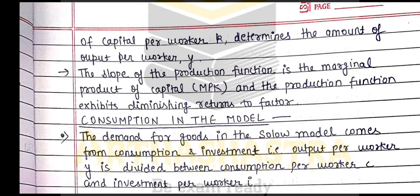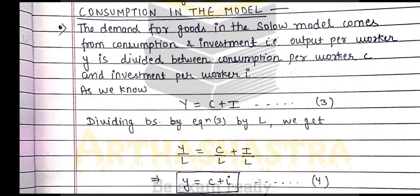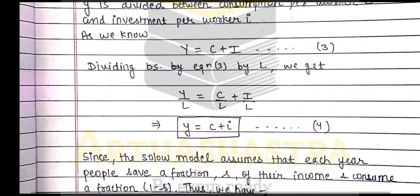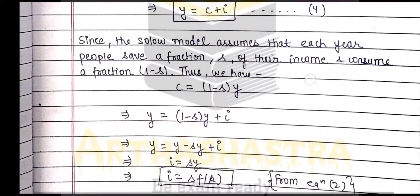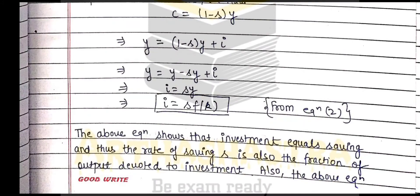Then we move to the consumption side of the model, and again using various notations we will derive some important equations. Using the equilibrium condition, we will derive the equilibrium condition of the Solow model, so that is I equals S times f(k).